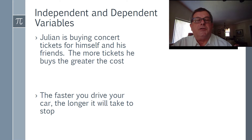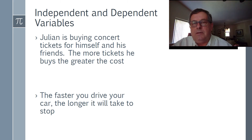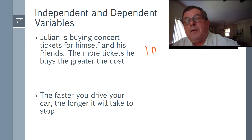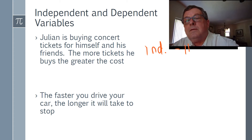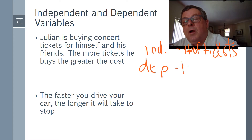First sentence: Julian is buying concert tickets for himself and his friends. The more tickets he buys, the greater the cost. We need to find the independent and dependent variables. The total cost of the tickets is going to depend on how many tickets he buys. So the independent variable is the number of tickets, and the dependent variable is the total cost of the tickets.